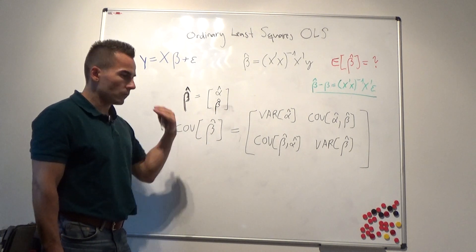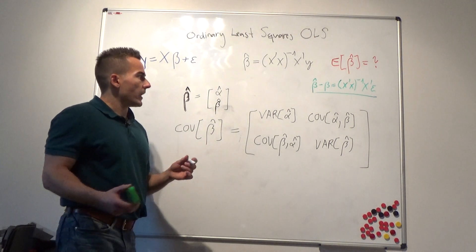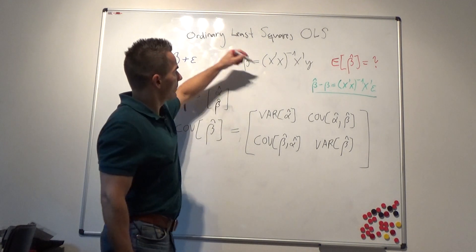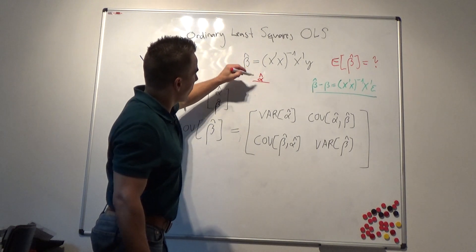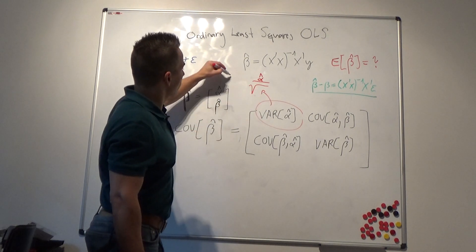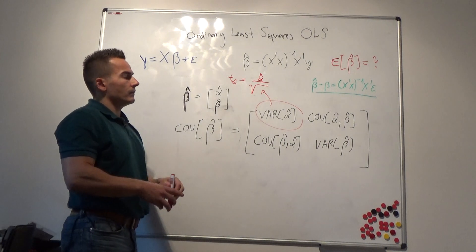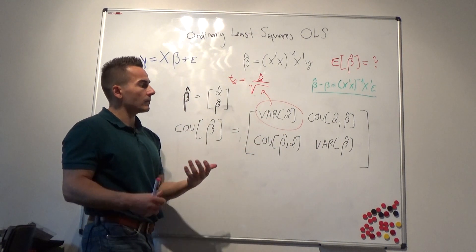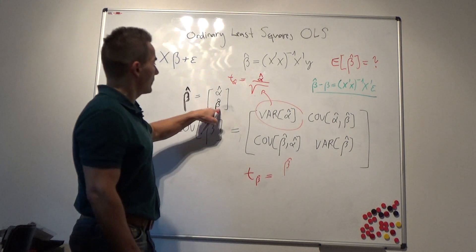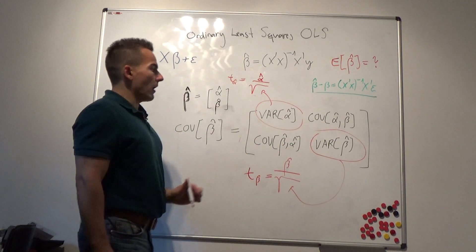To compute the t-statistic, we take our estimated alpha-hat and divide it by the square root of the first element of the variance-covariance matrix. Similarly, to test whether the market sensitivity beta is significant, we take beta-hat and divide it by the square root of the second element on the main diagonal of the covariance matrix.